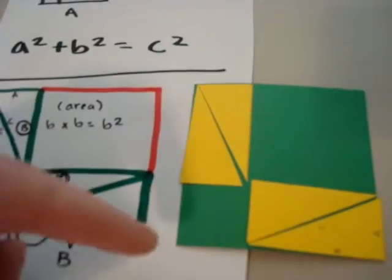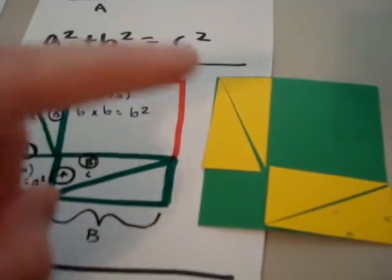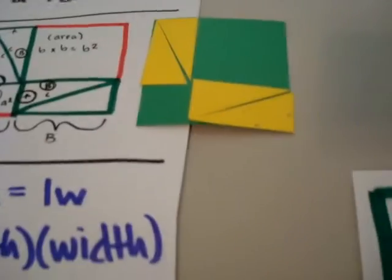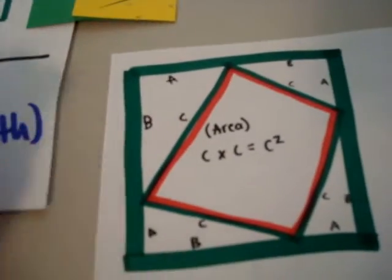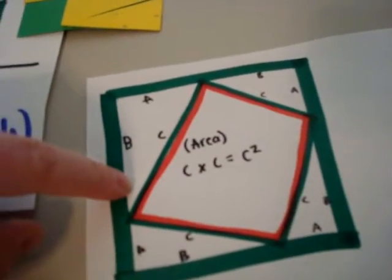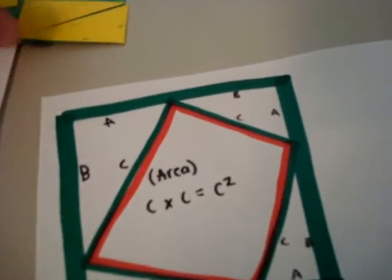For these two areas, you have A and B. So now we're missing the C squared. For that one, you put the triangles on the corners. Let me do that real fast.